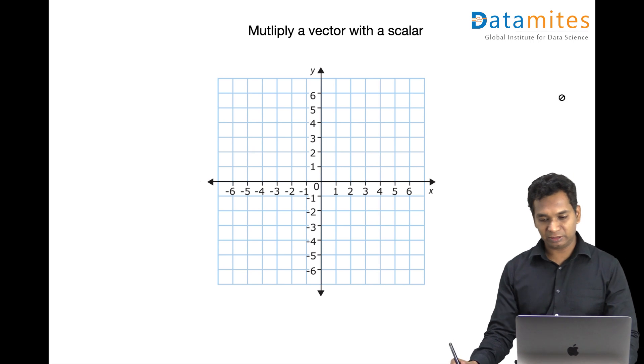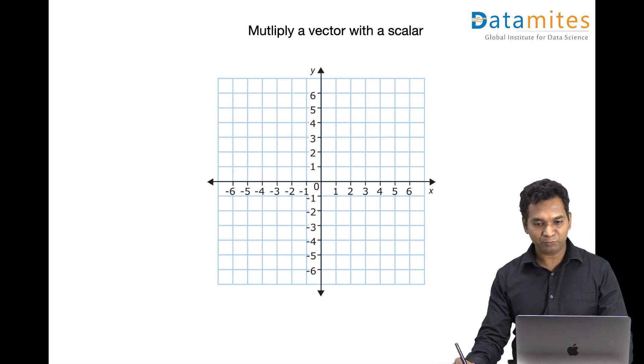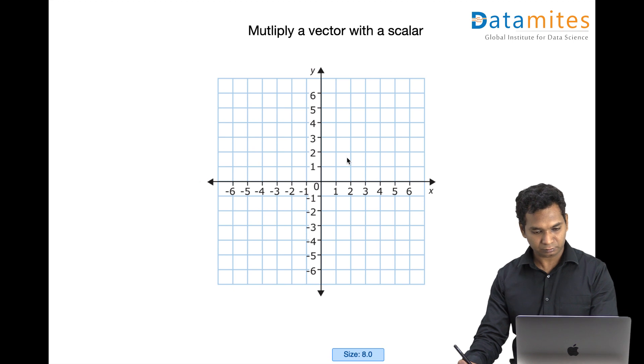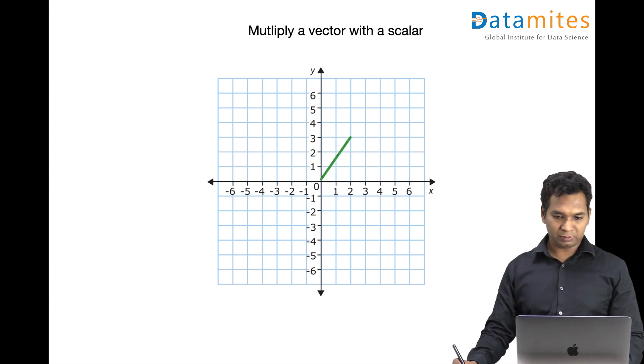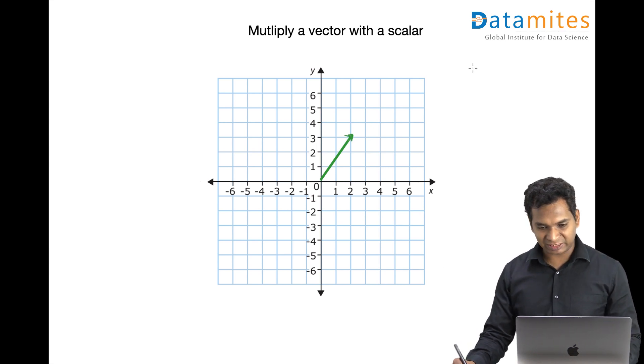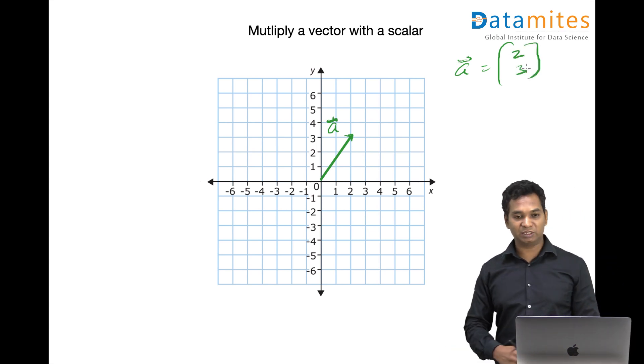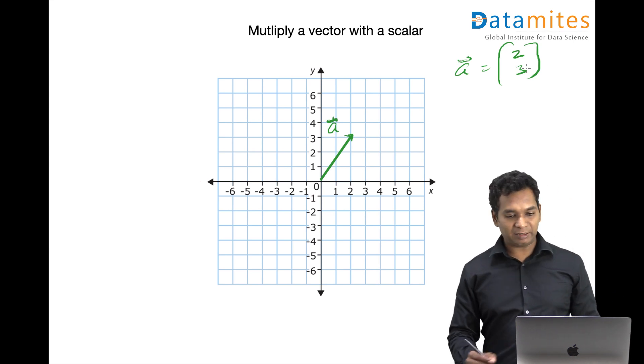Taking the same two-dimensional space for this idea. Let me draw a quick vector. So let's say something like this. And this vector, let's say it's vector a, can be represented as 2 comma 3, as we have done in the previous videos. If you want to multiply by a scalar, we can do this.